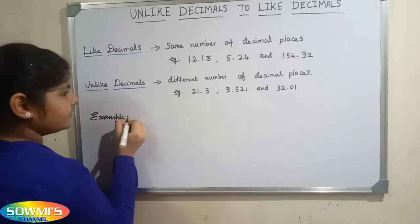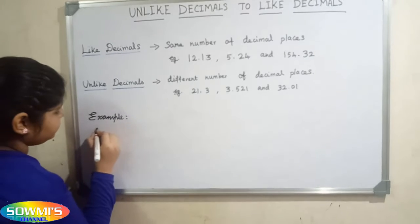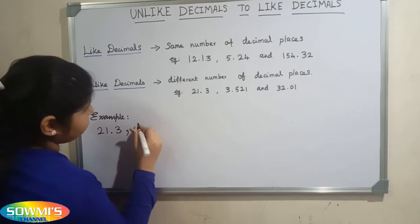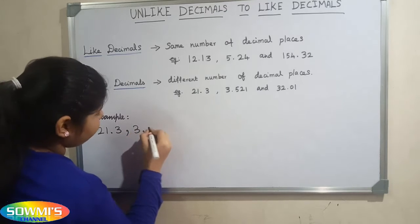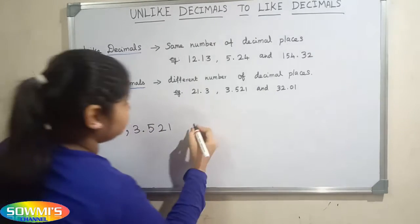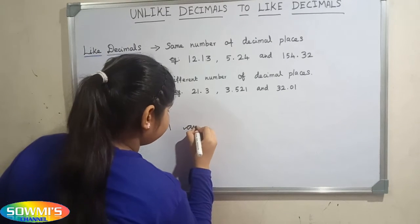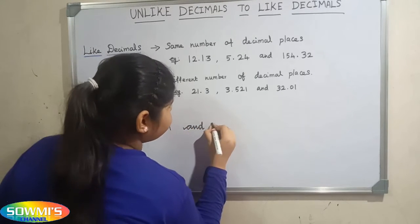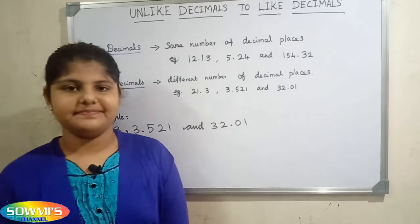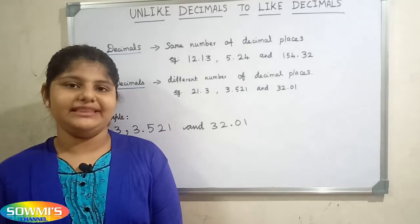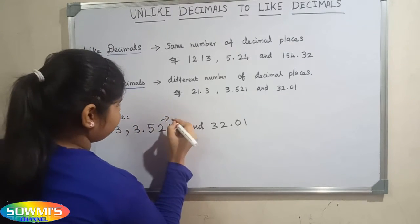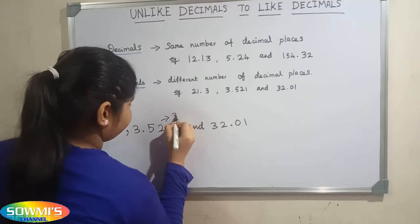Now we will see how to convert unlike decimals into like decimals. For example, consider 21.3, 3.521, and 32.01. First, we have to find the maximum number of decimal places. Here the maximum number of decimal places is 3.